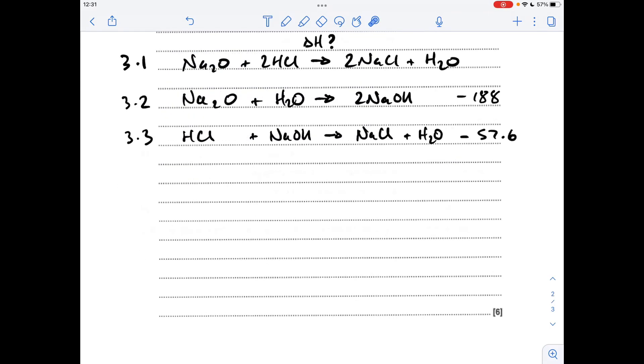So now we've got to calculate the enthalpy change for reaction 3.1, so I'm just saying delta H question mark. We've just calculated 3.2 was minus 188 kilojoules per mole, and we were given 3.3 is minus 57.6. Now in my opinion the easiest way to get to the answer from here is to use simultaneous equations rather than try and draw a cycle. So what do I mean by that? Basically, we're going to make the equation that we want to know the enthalpy change for out of the equations that we know the enthalpy changes for.